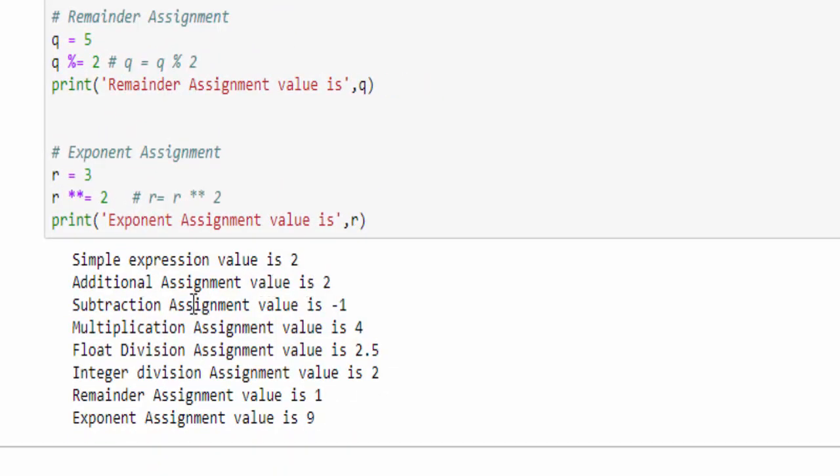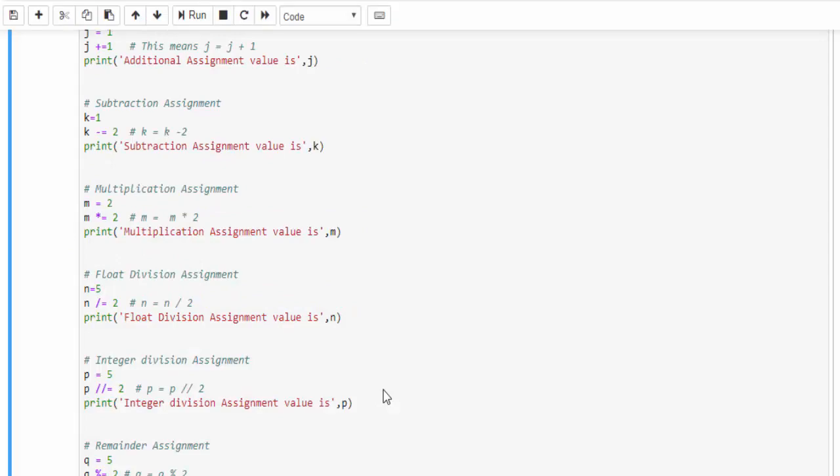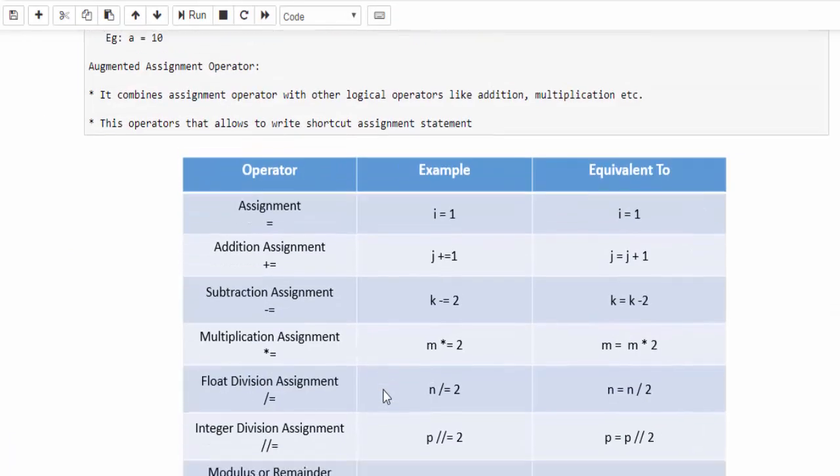We got the output. For addition it is 2, for subtraction it is minus 1, for multiplication 2 into 2 it is 4. Then float division 2.5, the integer division is not displaying the decimal points. Then the remainder is 1 and exponential 3 into 3 equal to 9. Hope you got an idea how to create the shortcut statement.